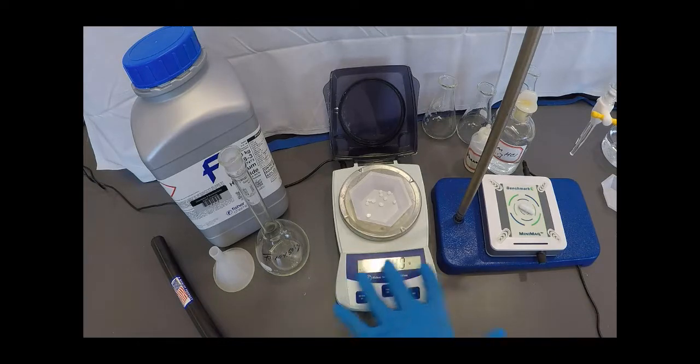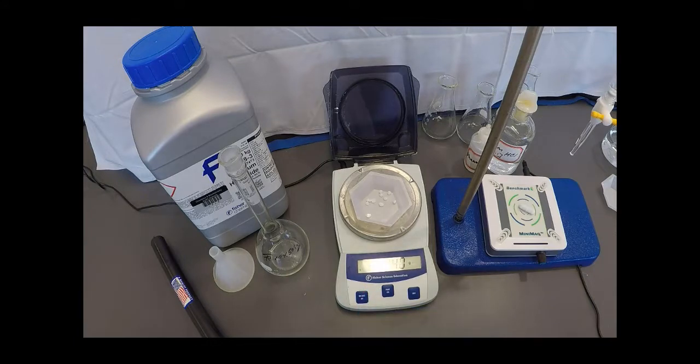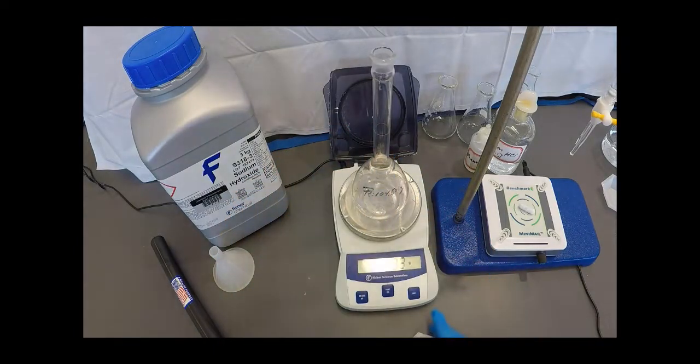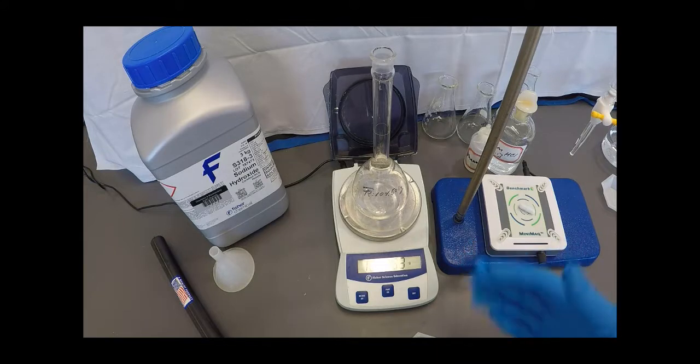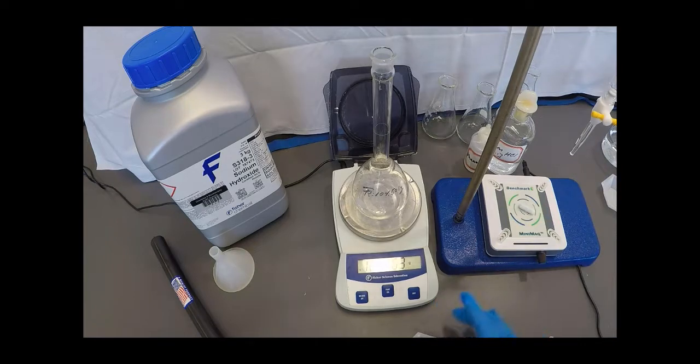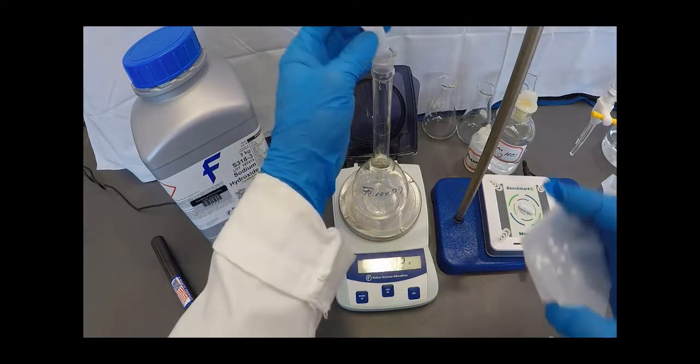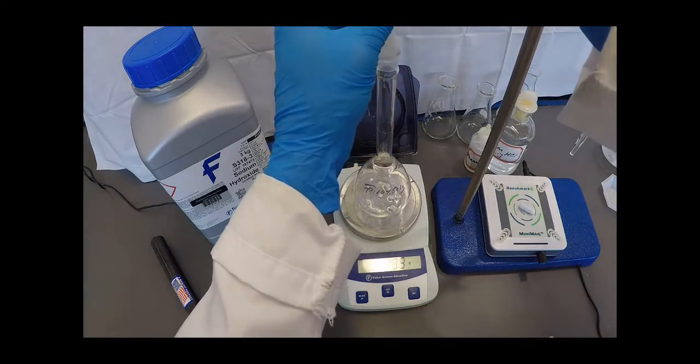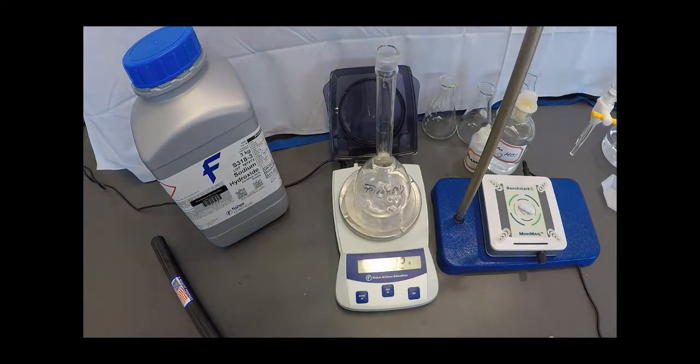So now that I've got approximately one gram, 1.040 grams of sodium hydroxide, I'm going to take a clean 250 milliliter volumetric flask. And so to make up a 0.1 molar solution, I would need one gram of sodium hydroxide. So I'm going to tare this. And as you can see, I've got 1.031 and that number should drift upwards as that sodium hydroxide takes in moisture from the air.